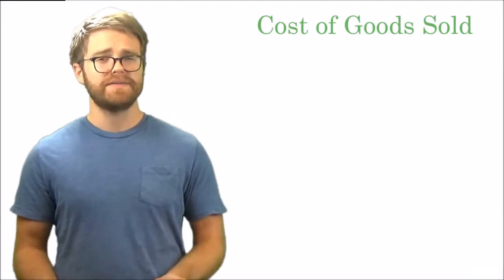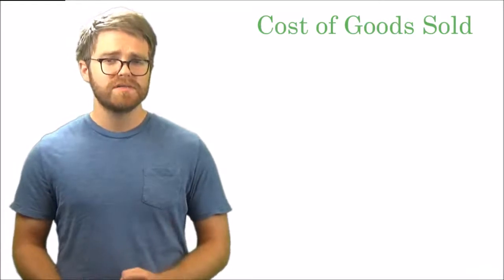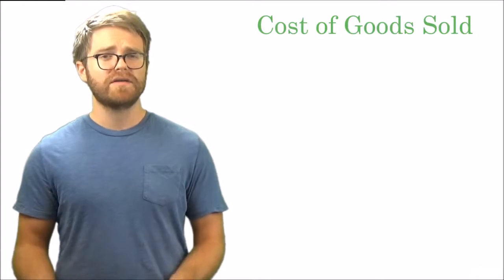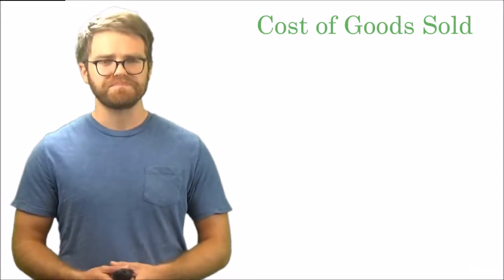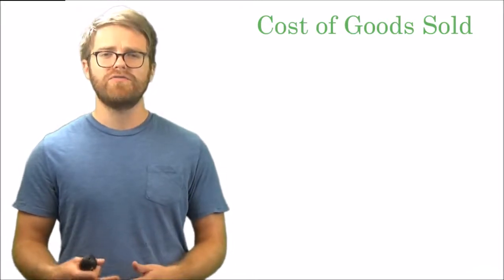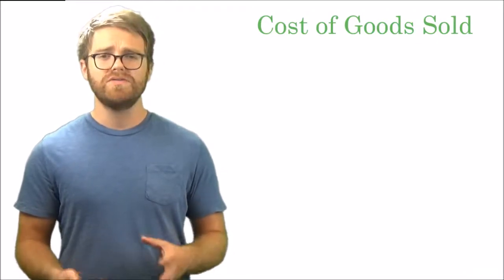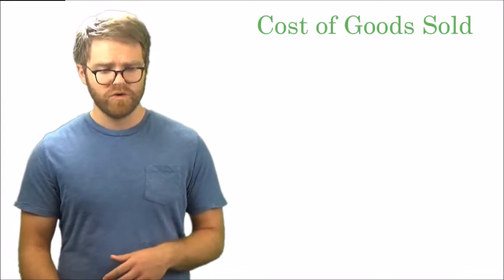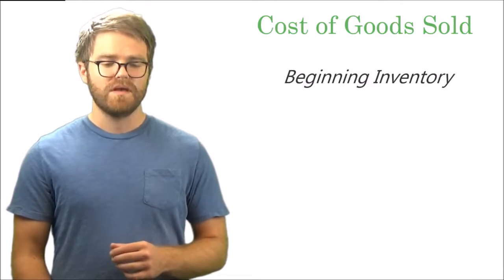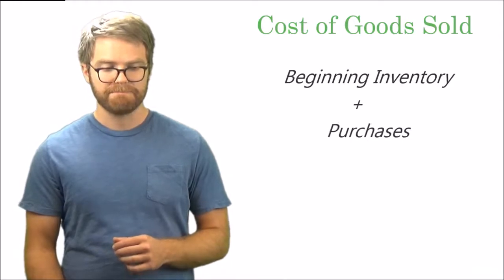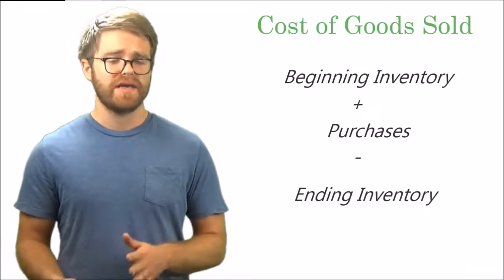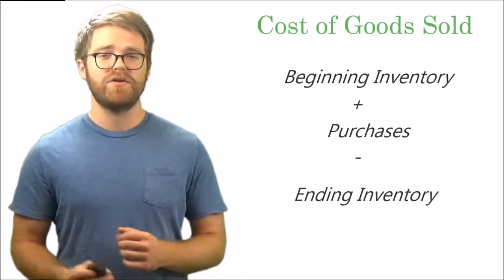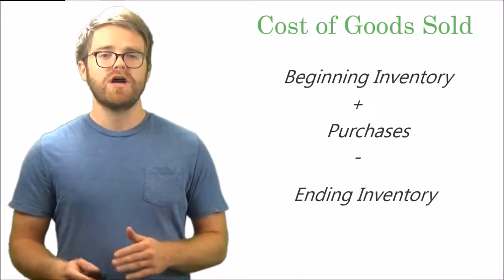Cost of goods sold is kind of what it sounds like. It's usually used in manufacturing businesses. When you manufacture a product, you have to get all those materials together — that's the cost. You buy those materials and then sell the product, so it's essentially the cost of what you sell. Here's the basic formula: beginning inventory, plus purchases, minus ending inventory equals cost of goods sold. Write this formula down. We're going to talk about inventory more in the balance sheet section.